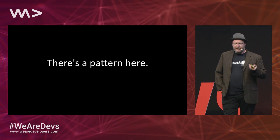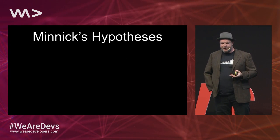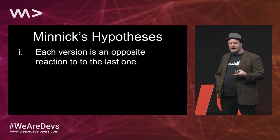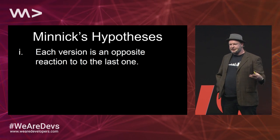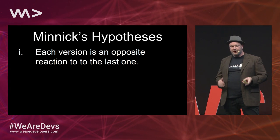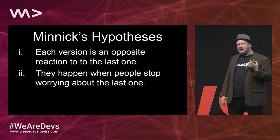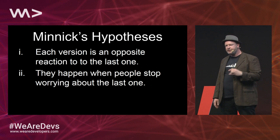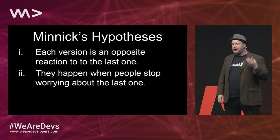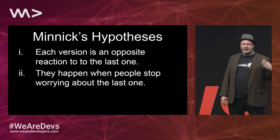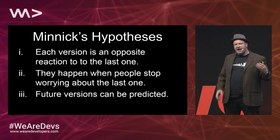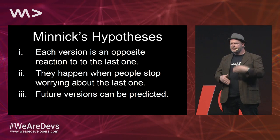I came up with a theory of web evolution in 2005, and it had three parts. First, each version of the web is an opposite reaction to the previous version — the bottom-up Web 2.0 was a reaction to top-down Web 1.0. Second, web versions happen when people stop worrying about the things they worried about in the previous version. For example, in Web 1.0 people were afraid of cookies and client-side code, but Web 2.0 wouldn't have happened without them. Third, you can predict future versions of the web by looking at these first two rules and applying them.